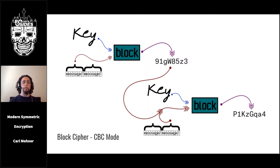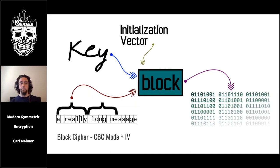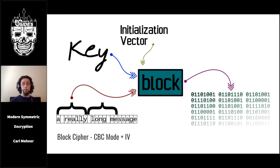CBC mode is further improved by adding another input called an initialization vector, commonly abbreviated IV. Depending on the protocol, this IV is combined into the initial state of the cipher, so encrypting the same message over and over with the same key but with a different IV can produce a different output. Because the IV is an input to the encryption function at the start and is not related to the key or ciphertext, it's considered a public value and can be sent or stored alongside the ciphertext.